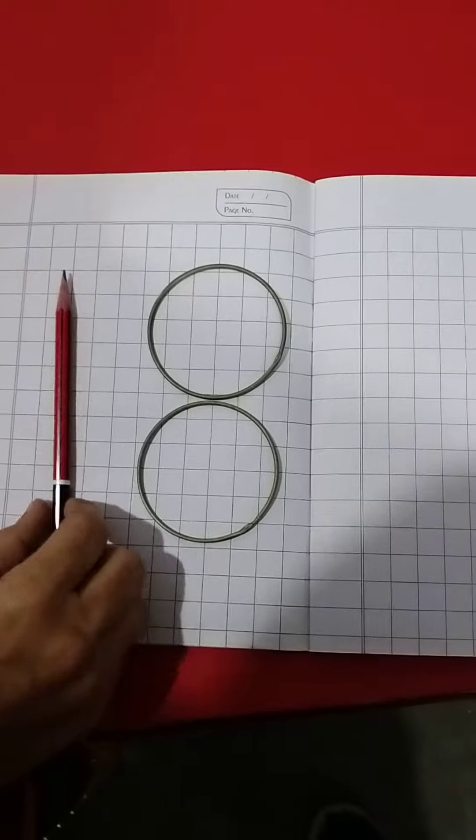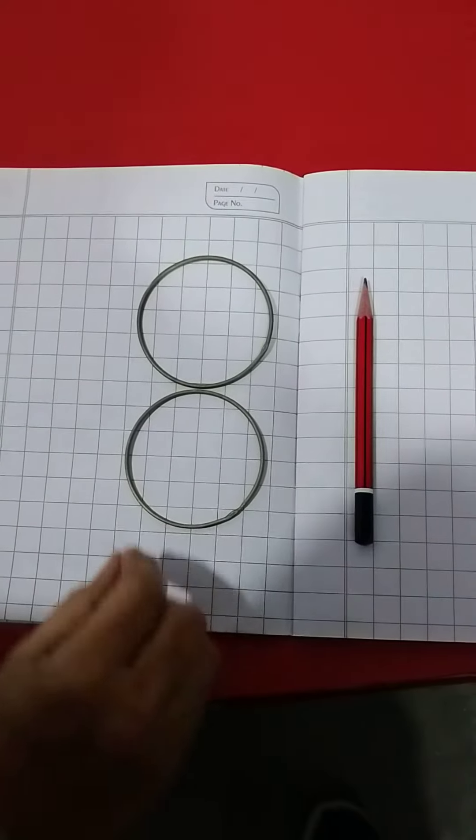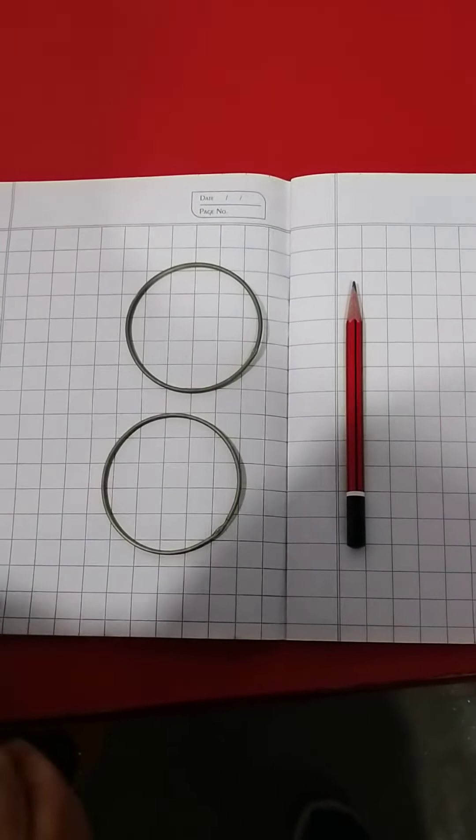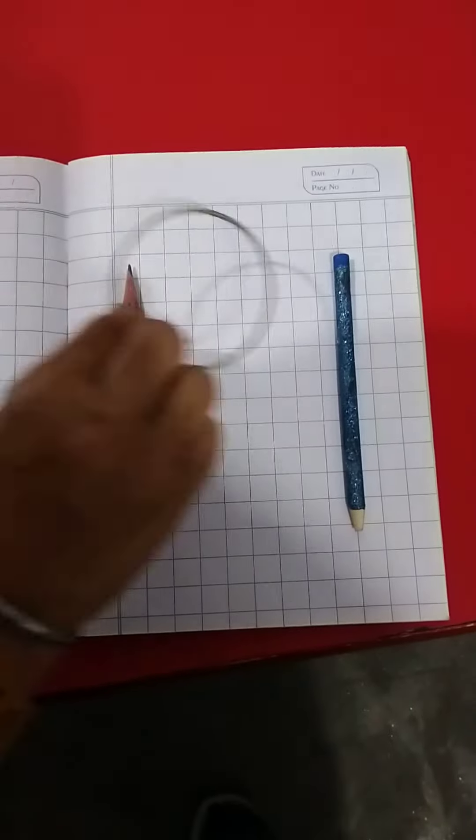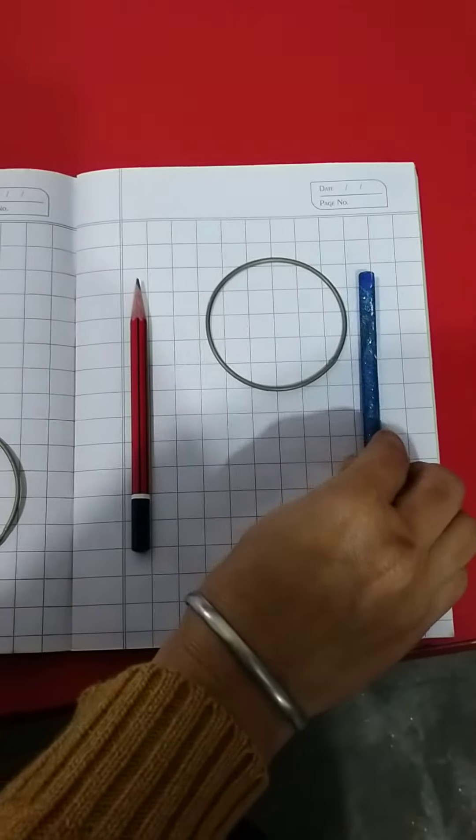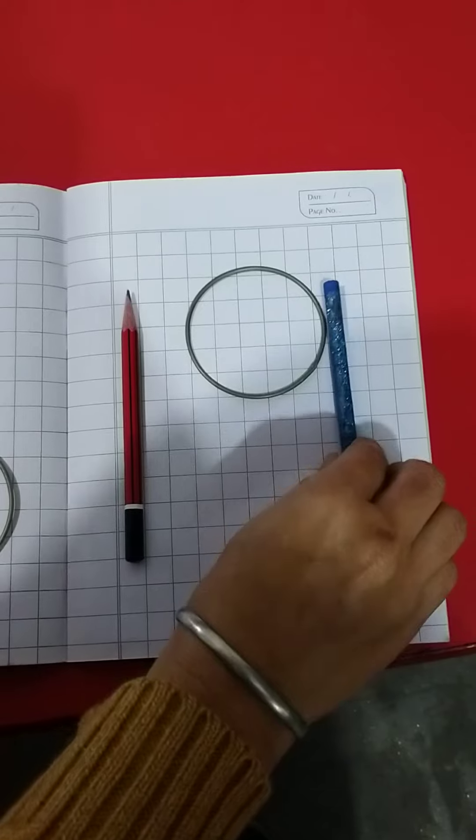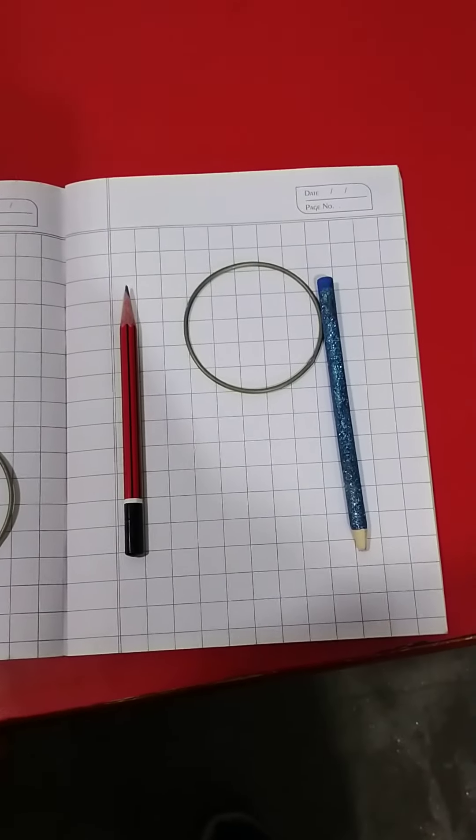Aisay hi aapne number 19. We kaise banana hai? Like this. Phir yaha pe ek or pencil rakhokhe. Phir yeh aapka circle aagya. It show you number 19. Okay?